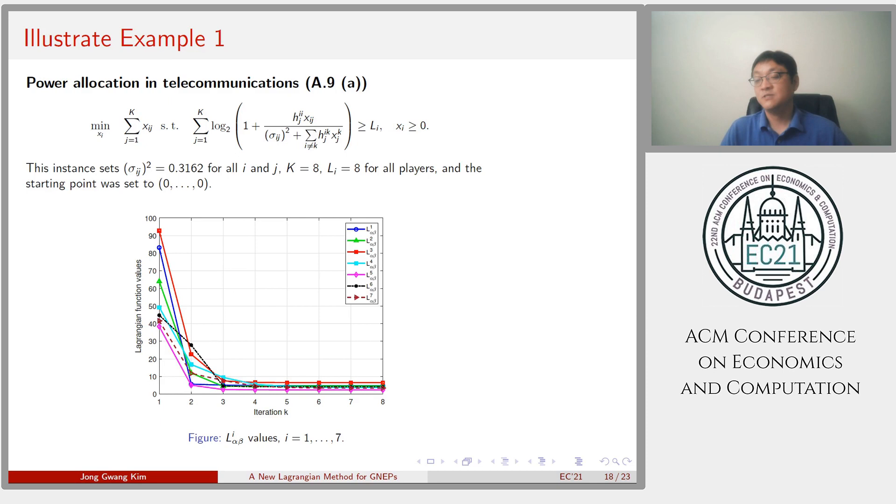I conducted numerical experiments on the test problems in the GNEP literature. The results showed the effectiveness of algorithm 1, and they are presented in the paper. Finally, in this talk, I wanted to share two computational results with graphical illustration. Let's get back to the power allocation problem. As shown in the figure, all P-Lagrangian values are monotonically decreasing and convergent, as we expected.